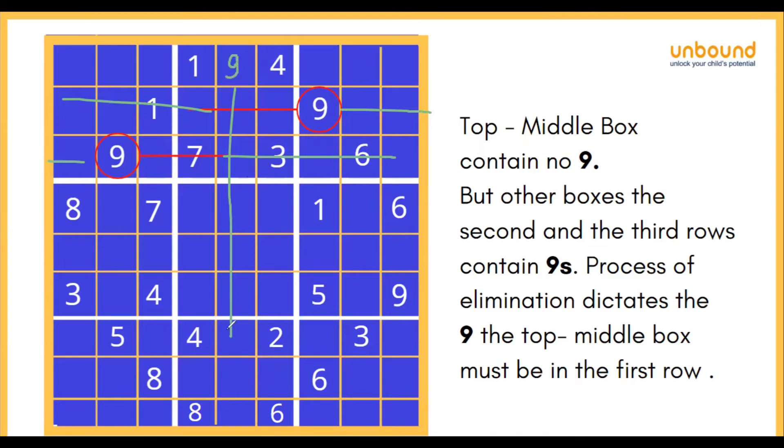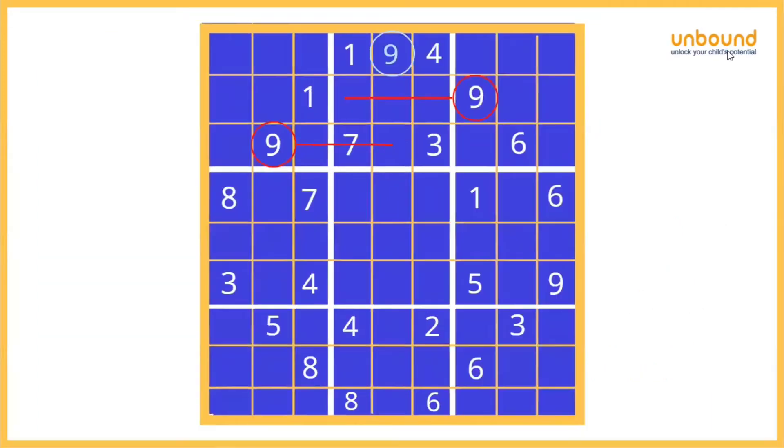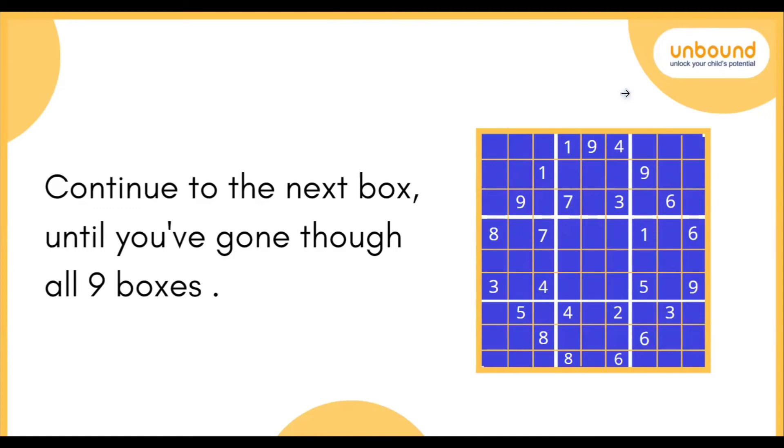Now, remember, throughout this column, 9 cannot be repeated, and also with this row. Same goes with this row for 9 and same goes with this row for 9. Now, as you can see, 9 has been filled. So, similarly, you can solve for all the squares, all the boxes and bam! Your Sudoku will be complete. Isn't it easy?